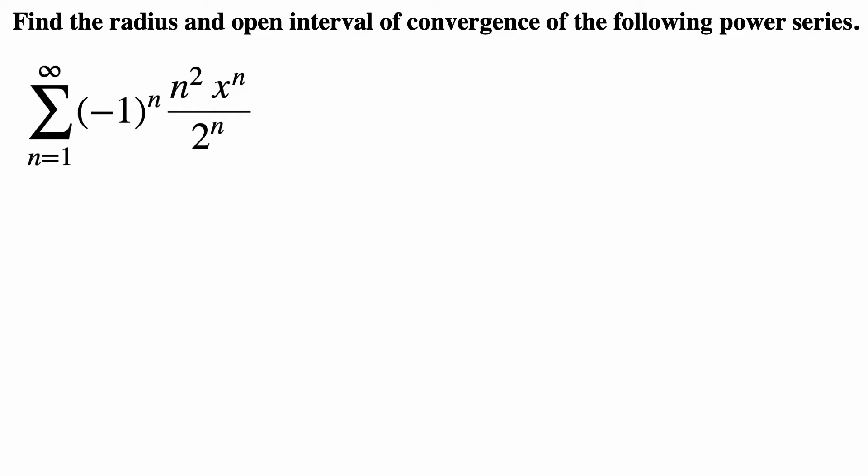Find the radius and open interval of convergence of the following power series. So let me write this power series as the sum from n equals 1 to infinity of x to the n. We have negative 1 to the n, n squared on the top and 2 raised to n on the bottom.